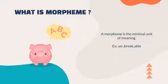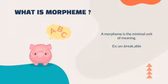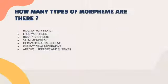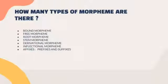Morpheme includes both forms that can stand alone and those that cannot. Morpheme can be exemplified by a word like 'unbreakable.' The types of morpheme are: bound morpheme, free morpheme, root morpheme, stem morpheme, derivational morpheme, inflectional morpheme, and affixes. Affixes are divided into two: prefixes and suffixes.